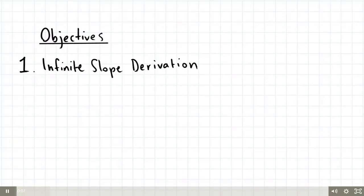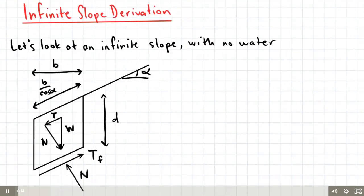Hey guys, the objective of today's video is to go through the derivation for infinite slope analysis. So let's now look at an infinite slope with no water. This is our slope, inclined at an angle of alpha above the horizontal.